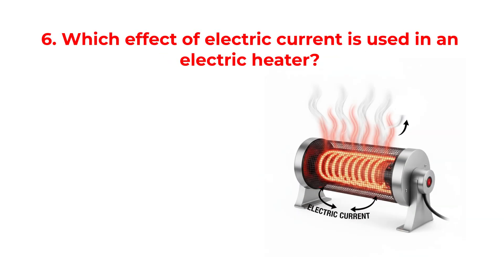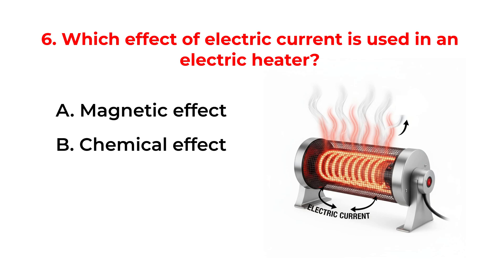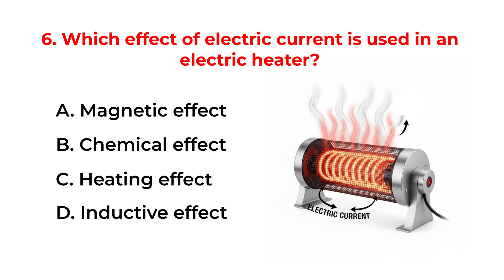Which effect of electric current is used in an electric heater? A. Magnetic effect. B. Chemical effect. C. Heating effect. D. Inductive effect.